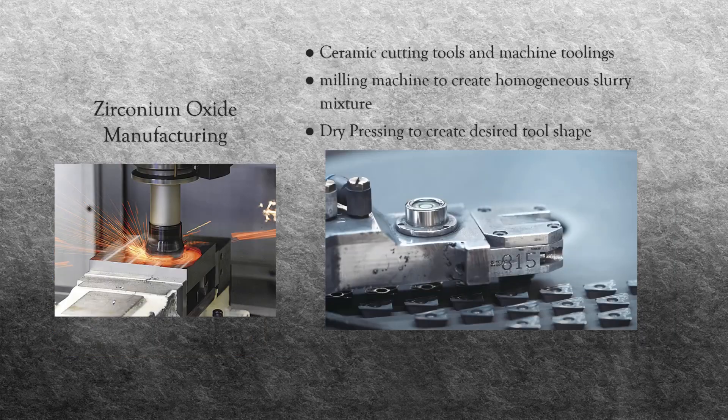Zirconium oxide can be manufactured into ceramic cutting tools, such as knives or machine toolings, for its high toughness and low thermal conductivity. In the creation of machine toolings or inserts, the manufacturing process utilizes dry pressing to create the desired tool shape. The materials are first placed in a milling machine alongside water, ethanol, and an organic binder, where a rotating cutting tool slowly grinds the ingredients into a fine, homogeneous slurry mixture.